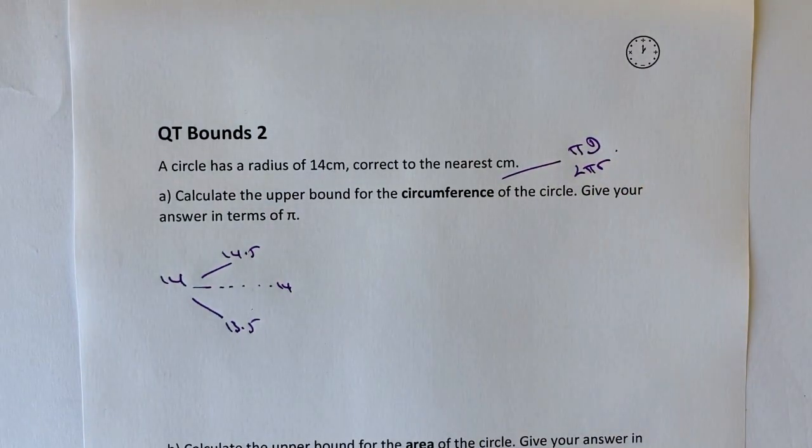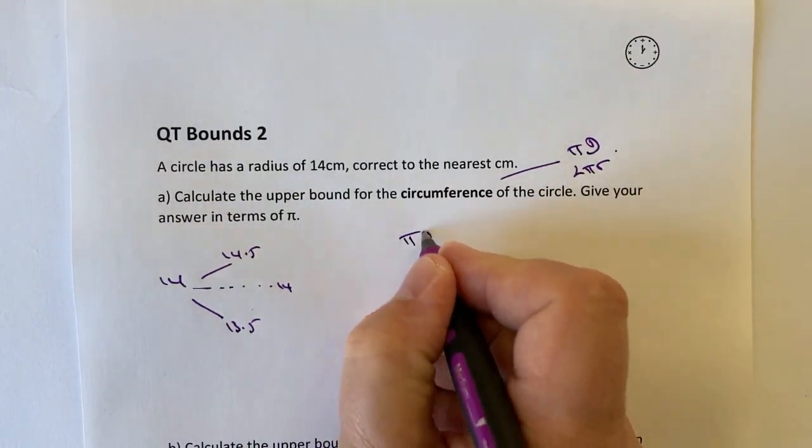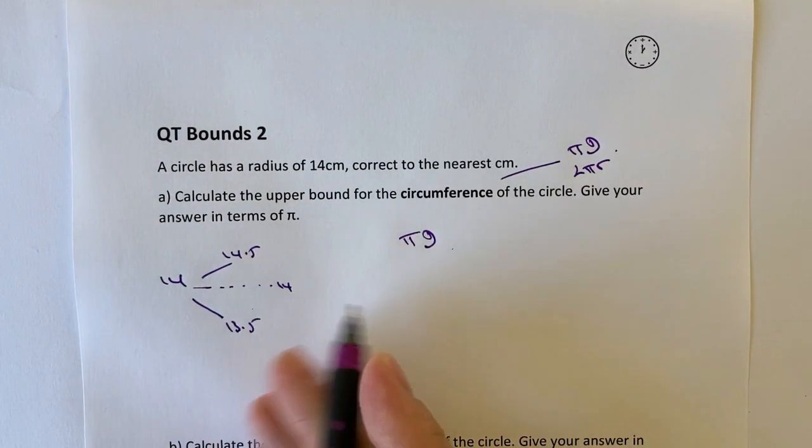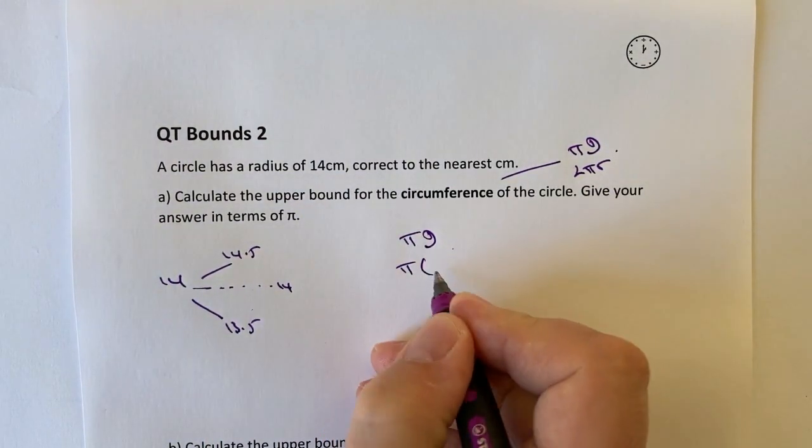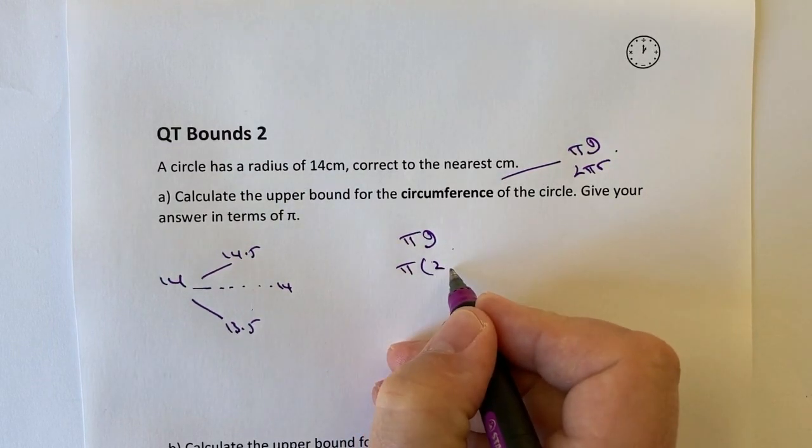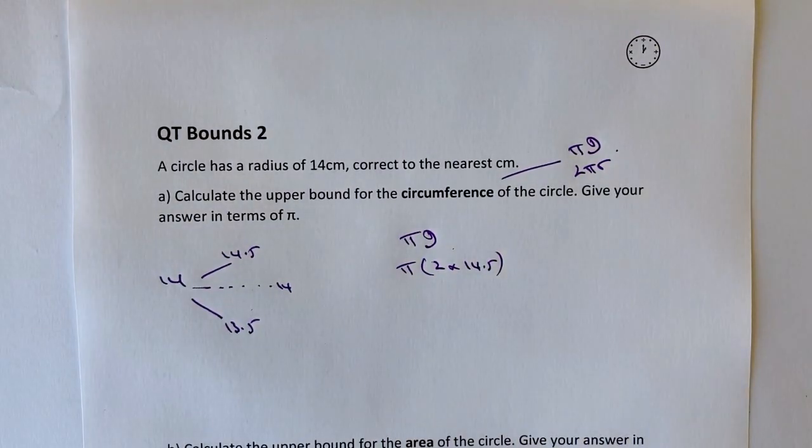In this particular case, I'm going to say πD. So if it's πD, well, remember this is the radius. So basically, I'm going to have π and the diameter is two lots of the radius. So it's two times 14.5. Well, two times 14.5 is 29.